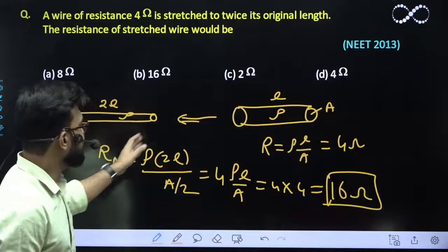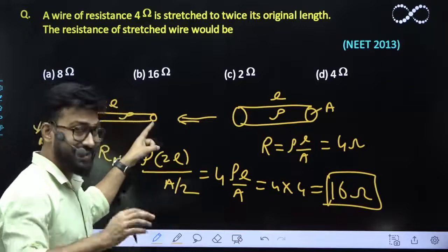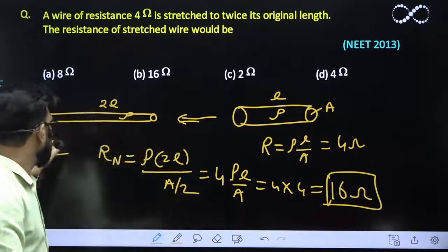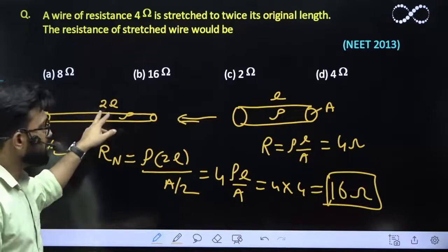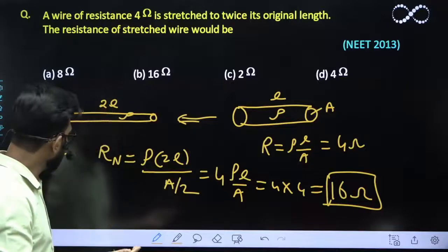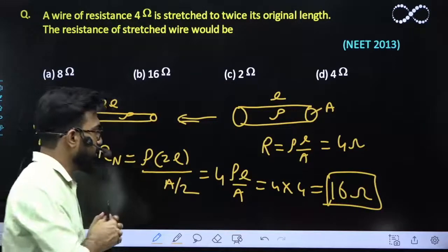Remember, whenever the length increases, the area decreases by the same proportion. If length becomes twice, area becomes half. If length becomes 3 times, area becomes 1/3. Generally, if length becomes N times, area becomes 1/N times.